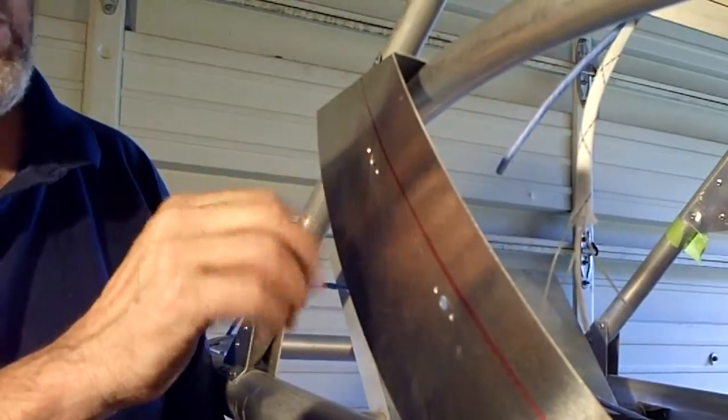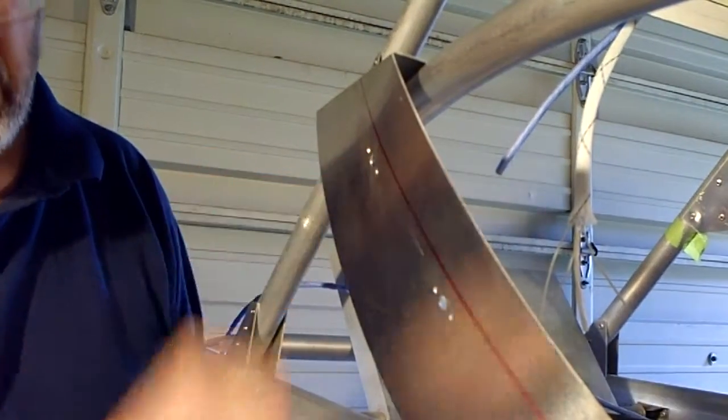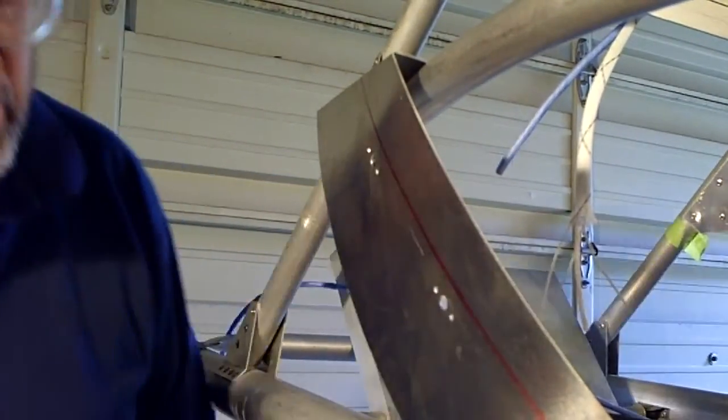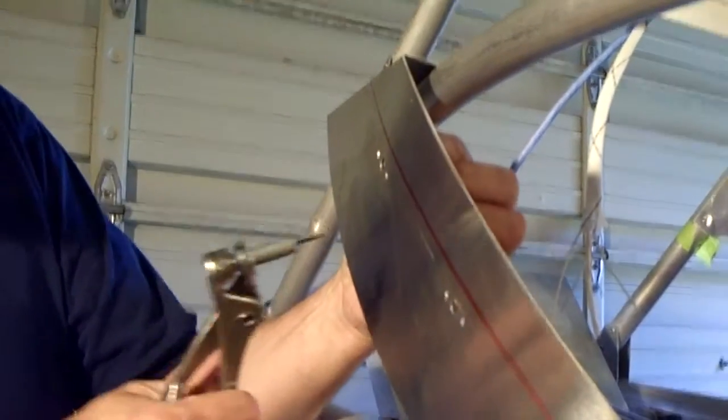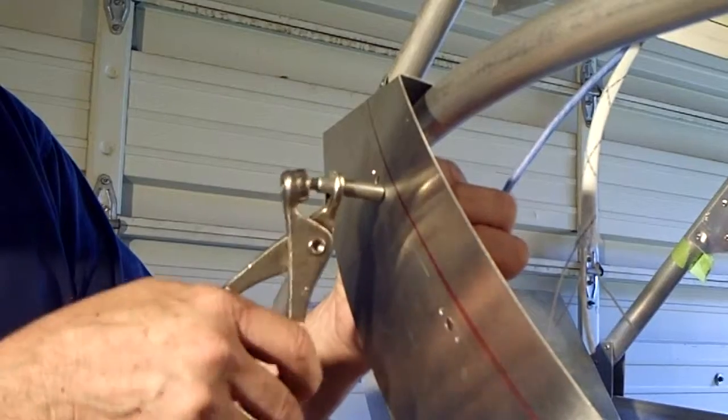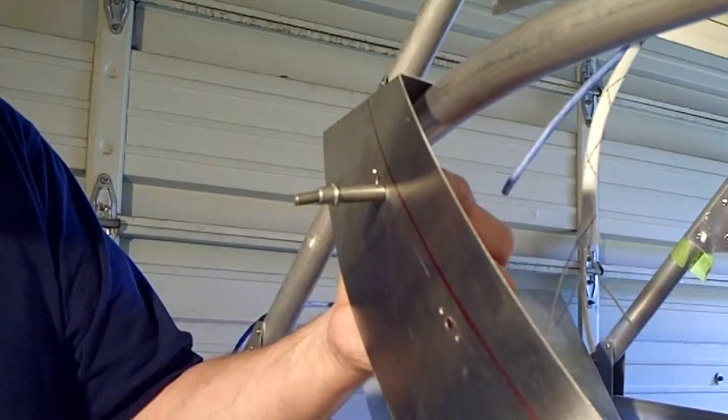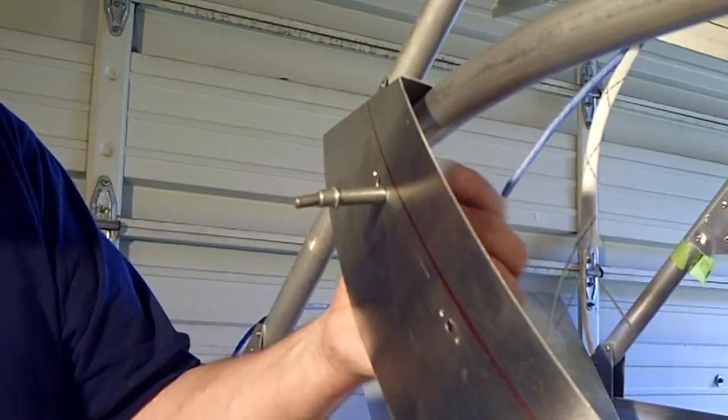Once I finish that, I went ahead and drill this out to a quarter inch. And you'll see why in just a second here. Take and put the nut plate in behind the surface here and drop a Clico in there. Line up the other hole.